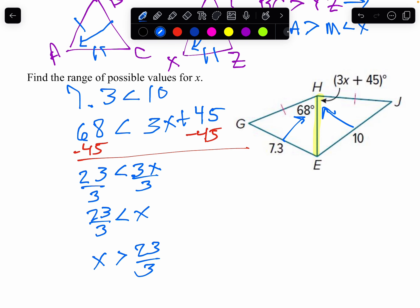So I know my second inequality, if I look at my angle here, 3X plus 45, it's an angle of a triangle. I know the triangle sum is 180 degrees. So,